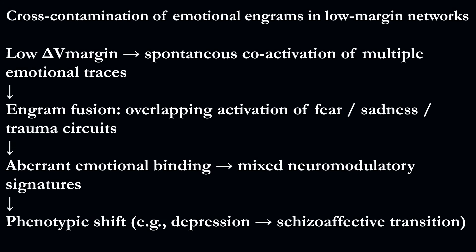Neurons that reach a critically low excitability margin become highly susceptible to incorporating new memory traces. During spontaneous replays, distinct emotional engrams — for example, fear and sadness circuits — can become co-activated. Their traces begin to overlap, forming hybrid connections and mixed activation patterns.